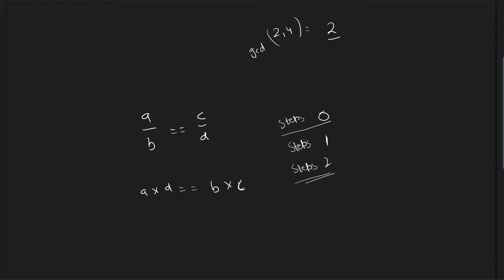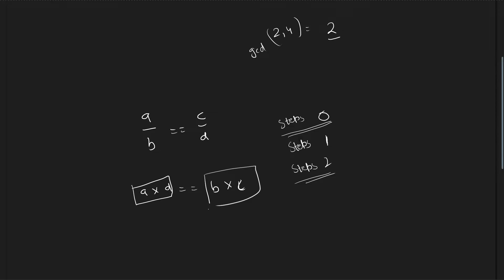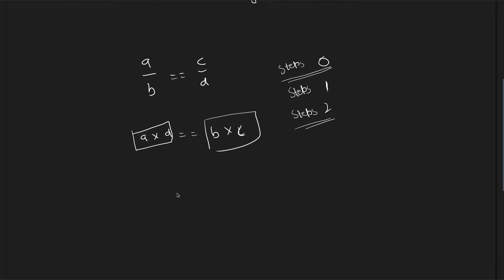When you require zero steps, this is the case when the two fractions are already equal — when A times D equals B times C.